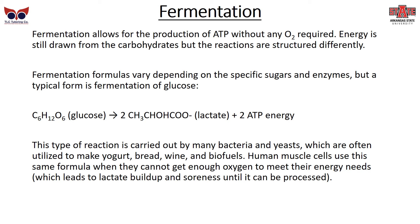Fermentation is another way to produce ATP without any O2 required. Energy is still drawn from carbohydrates, but the reactions are structured differently. In a typical glucose reaction, glucose is broken down to lactate or lactic acid and ATP energy. Fermentation is performed by many bacteria and yeast, and we use it to make yogurt, bread, wine, and biofuels. Human muscle cells also use this process when they can't get enough oxygen — when you're exercising hard and your muscles start to burn, that's lactic acid building up, causing soreness until it is broken down through aerobic respiration.